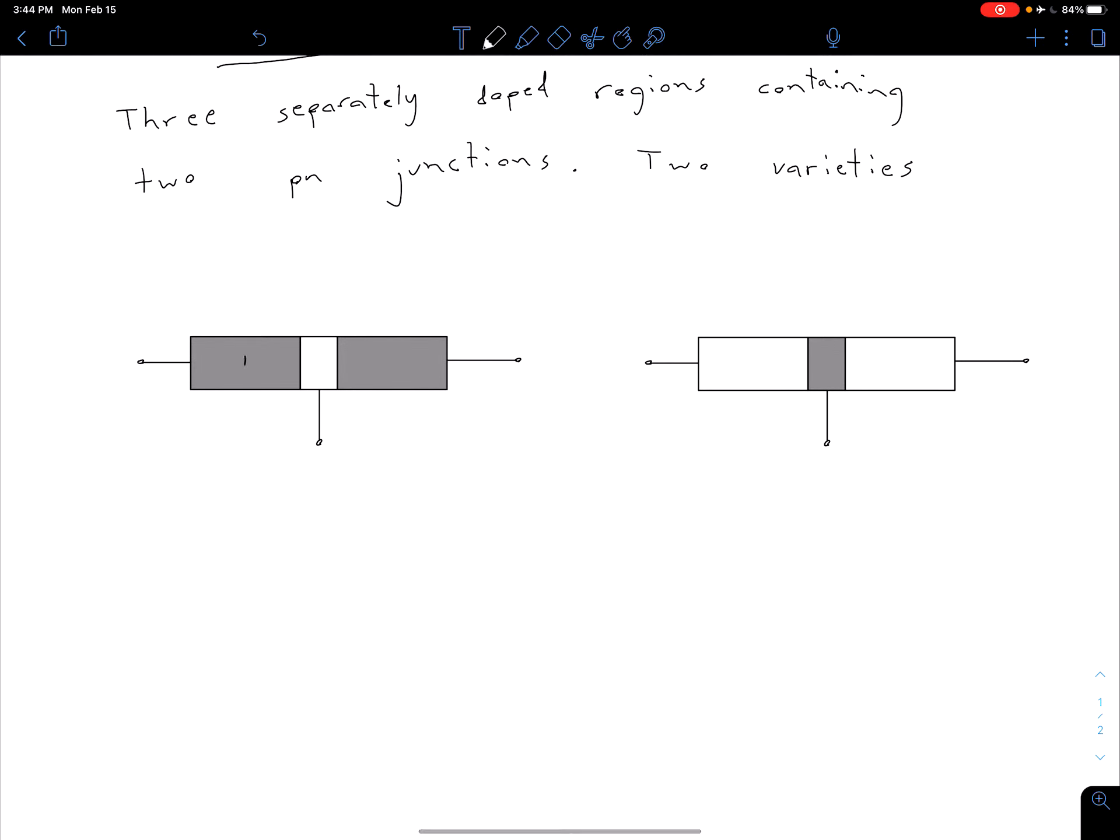The first variety is an NPN transistor, and we can see that this name comes from the fact that we have this P type region which is sandwiched between two N type regions. The other type is a PNP transistor, and of course here we have our N type region which is sandwiched between our two P type regions.